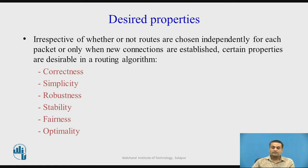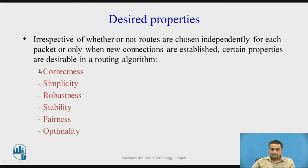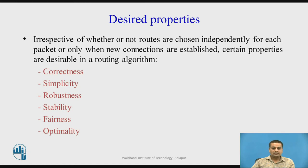What are the desired properties of routing algorithms? Regardless of whether routes are chosen independently for datagrams or only when a new virtual circuit is set up, certain properties are desired: correctness, simplicity, robustness, stability, fairness, and optimality. Correctness and simplicity need no explanation — the algorithm must be 100% correct and simple.